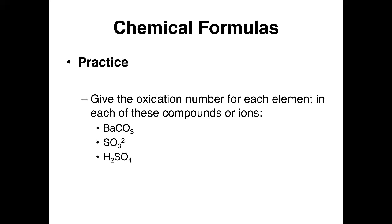H2SO4. Hydrogen in this case is plus 1 and oxygen is minus 2. So we have 2 times plus 1, plus 4 times minus 2, plus whatever sulfur is, equals 0. So 2 times plus 1 is plus 2, and minus 2 times 4 is minus 8. So plus 2 minus 8 plus whatever sulfur is equals 0. In this case, sulfur has to be plus 6.